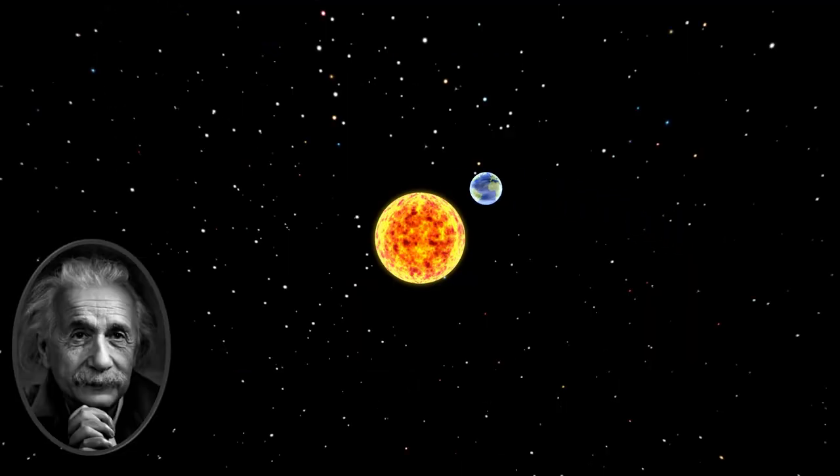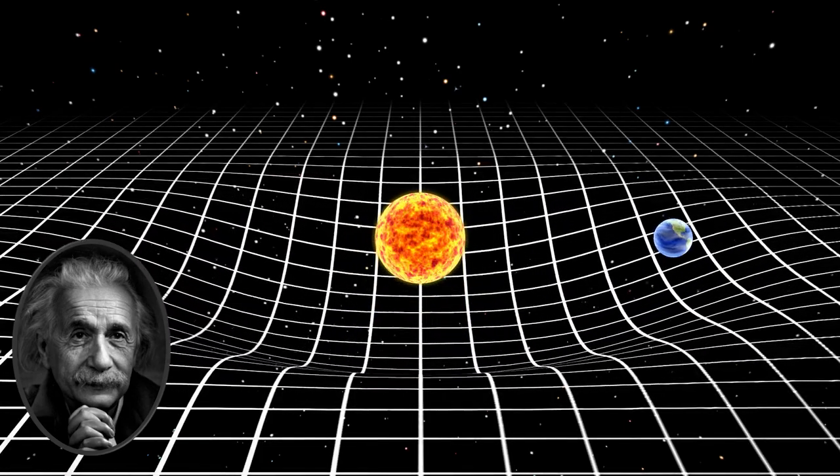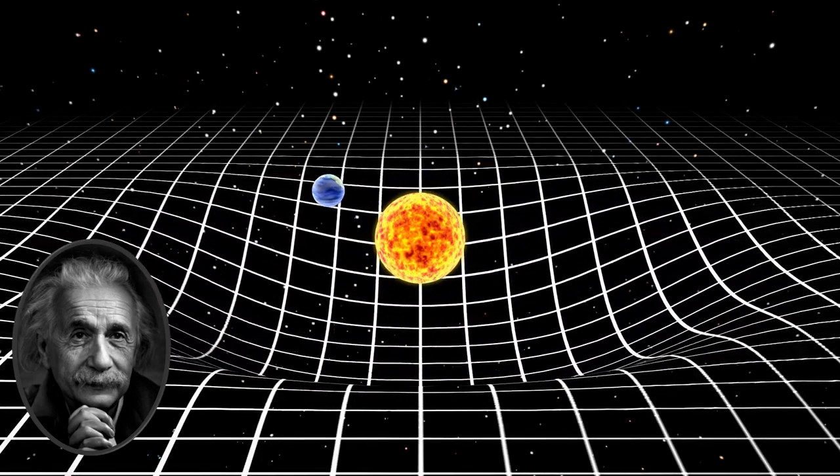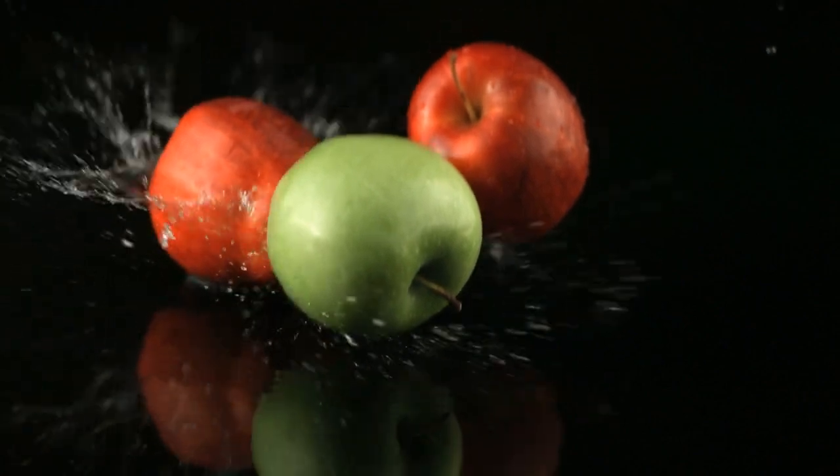You see, Einstein discovered that mass and energy cause space to bend. And when space bends, objects traveling through this bend are pulled into the curved space. We think that this is what causes the effect of gravity.